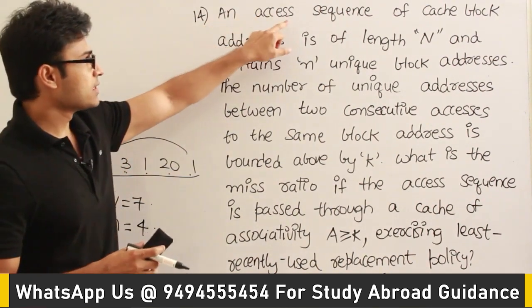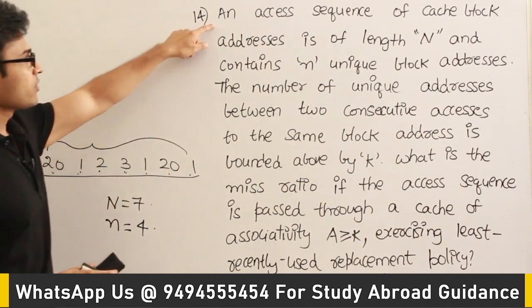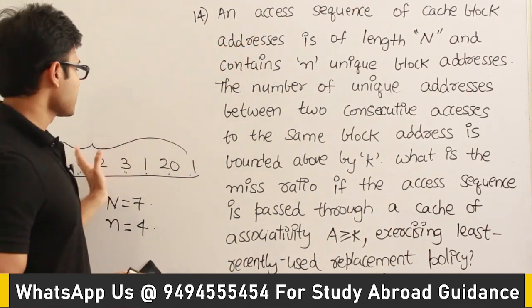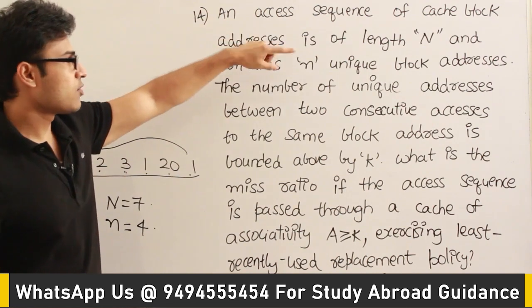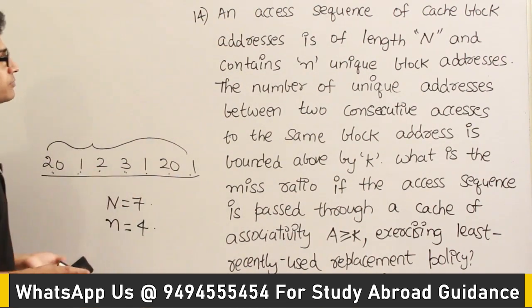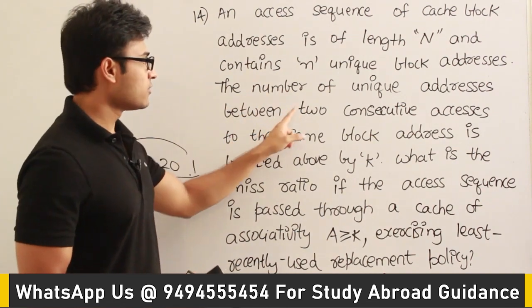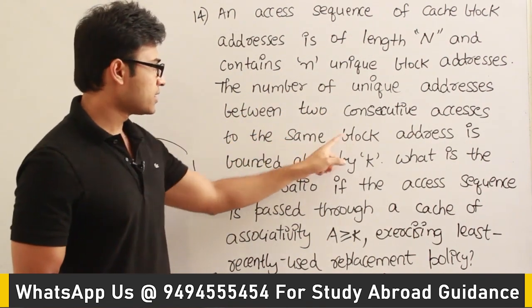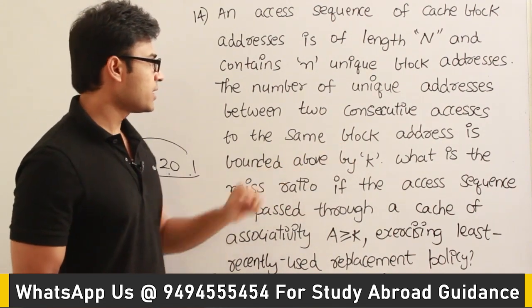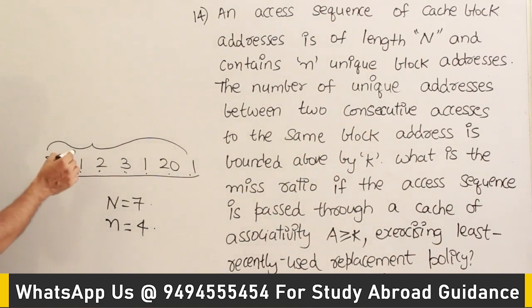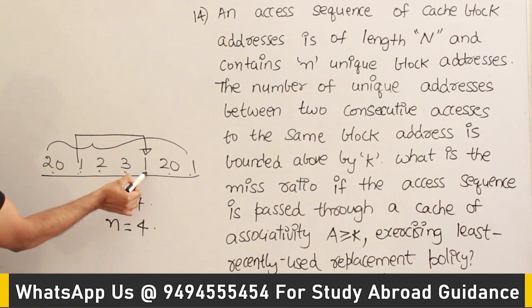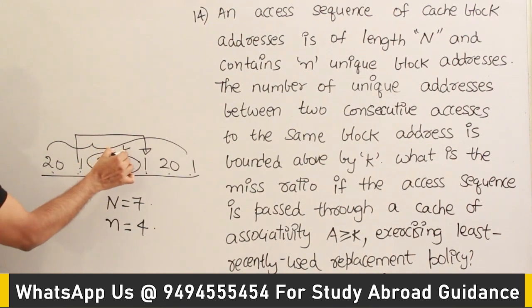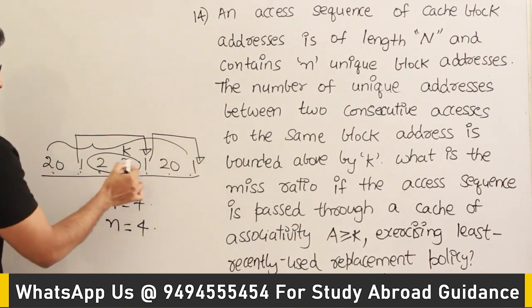The access sequence of cache block addresses is of length N and contains small n unique block addresses. The number of unique addresses between two consecutive accesses to the same block is upper bounded by k. So if block '1' is referred again, the number of unique blocks between those two references is bounded by k.